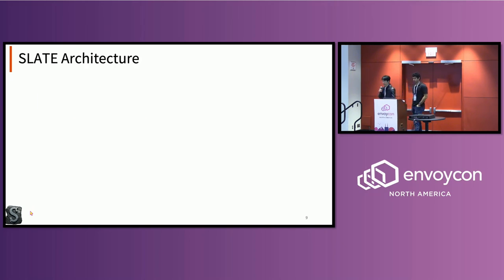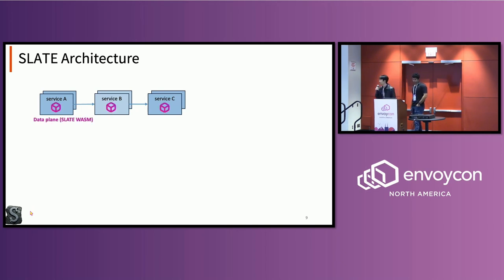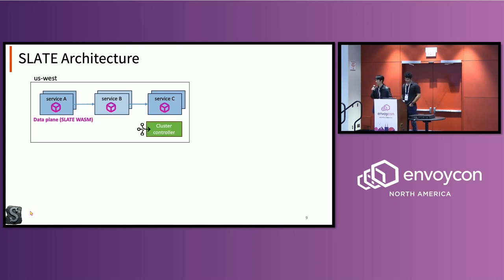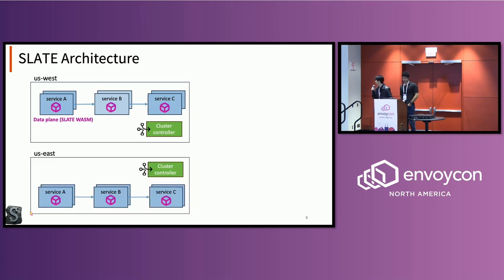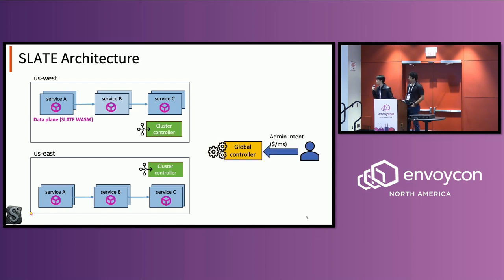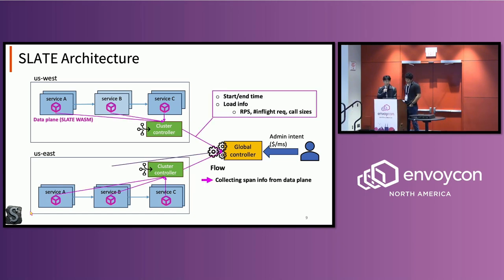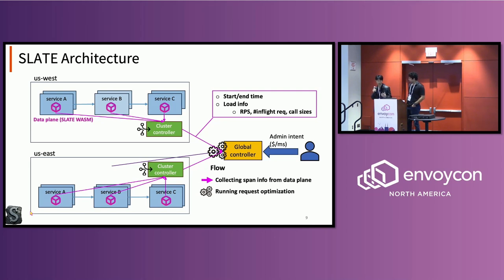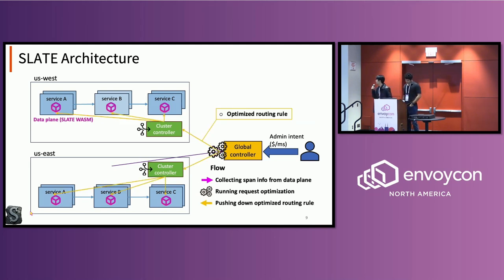This is our architecture, SLATE. There's an application with three services, and we have our data plane, which is SLATE WASM, a cluster controller — this is one cluster. We have multiple clusters, in this case two, and we have a global controller. The global controller receives admin intents like dollar-per-millisecond, which we'll talk about later. The data plane sends start and end time information and load information like RPS to the global controller through the cluster controller.